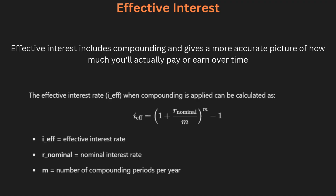Effective interest takes compounding into account, giving a more accurate picture of how much interest you will actually pay or earn over time. For example, a loan with a nominal interest rate of five percent compounded quarterly has a higher effective interest rate due to the effect of compounding. For engineers, understanding effective interest is crucial when evaluating loan options or investment returns. It helps in making more informed decisions about financing and ensures that the real cost of interest is clear.